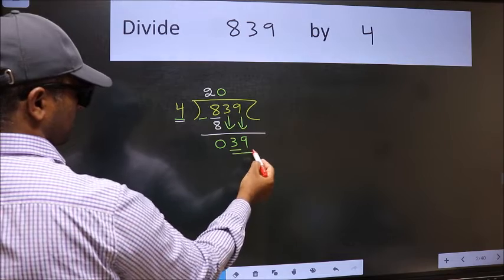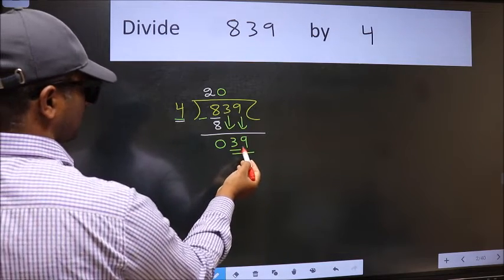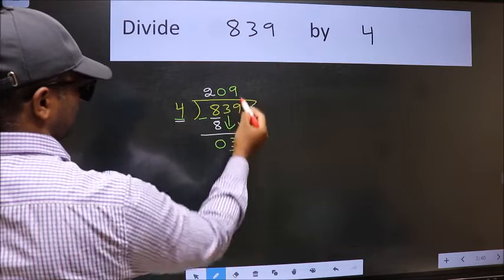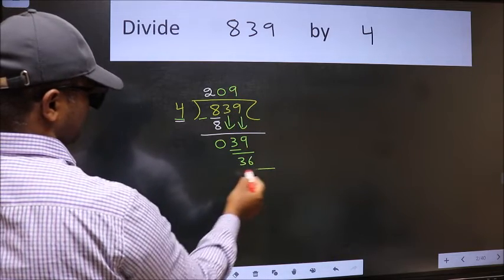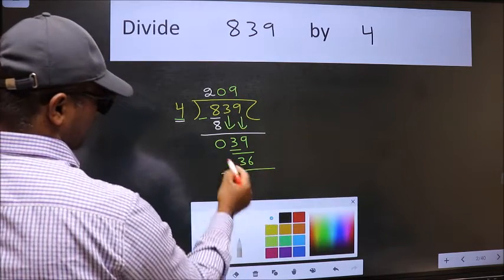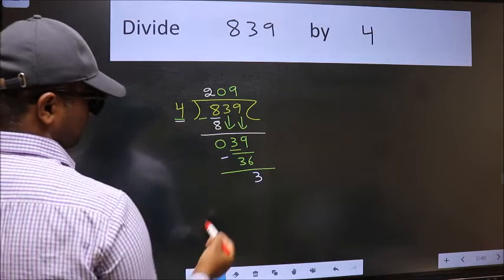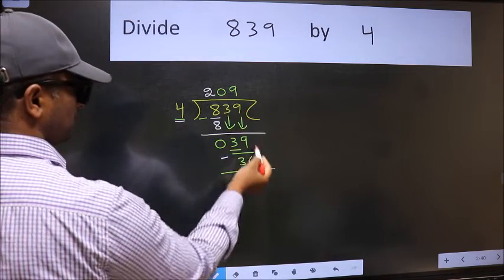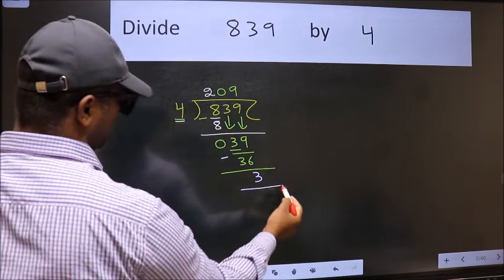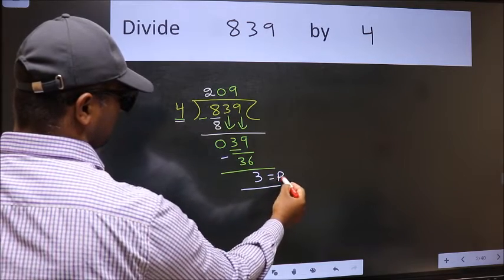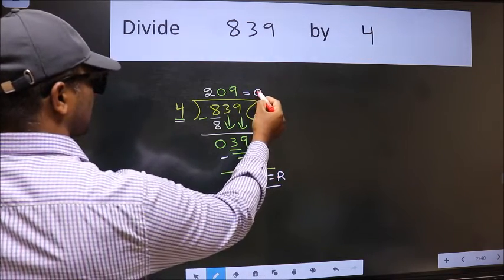Now 39. A number close to 39 in the 4 table is 4 times 9 equals 36. Now we should subtract. We get 3. No more numbers to bring down, so we stop here. This is our remainder and this is our quotient.